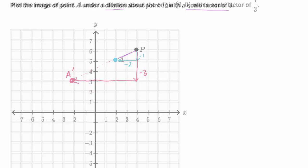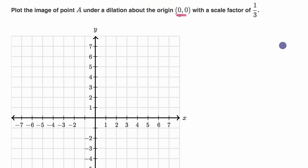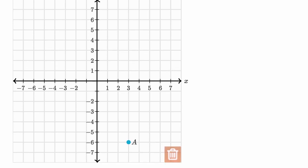Let's do another example with a point. So here we're told, plot the image of point A under a dilation about the origin with a scale factor of one-third. So first of all, we don't even see the point A here, so it's actually below the fold. So let's see, there we go. That's our point A.